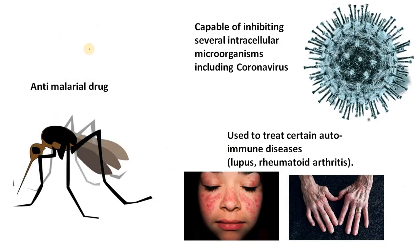Hydroxychloroquine or chloroquine is a potent anti-malarial drug used to treat certain autoimmune diseases such as lupus and rheumatoid arthritis. It is also capable of inhibiting several intracellular microorganisms, including coronavirus.